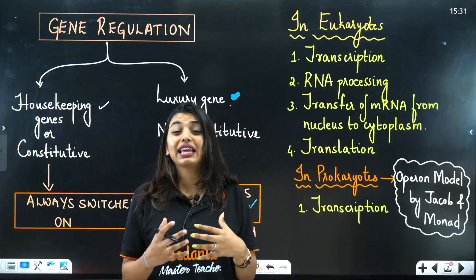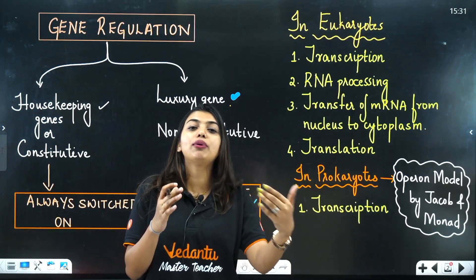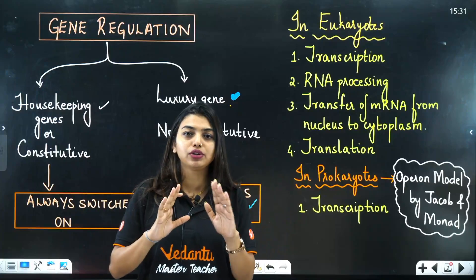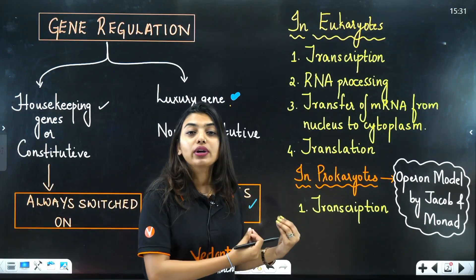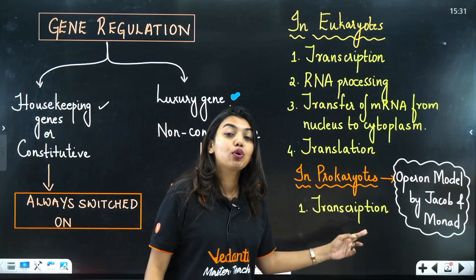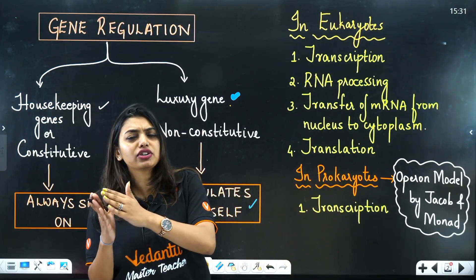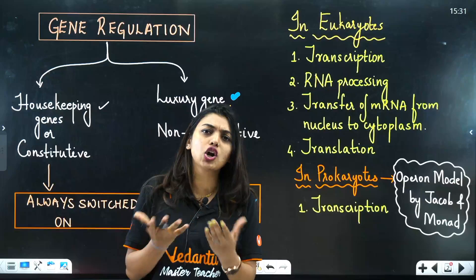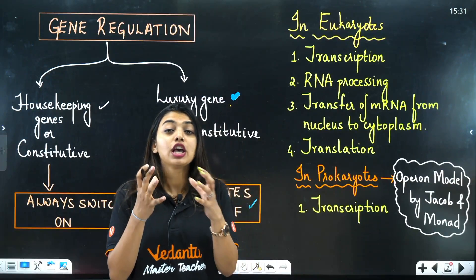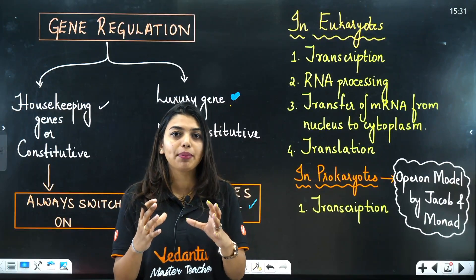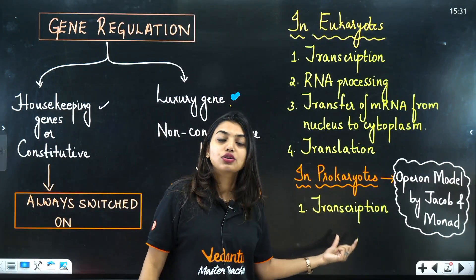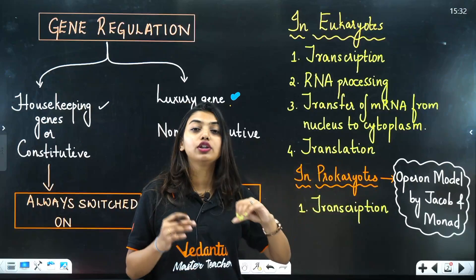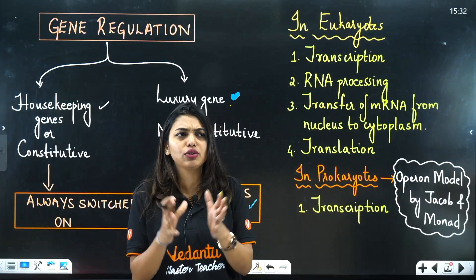In prokaryotes, since they are simpler organisms with polycistronic genes — meaning one gene codes for multiple proteins — transcription and translation are coupled reactions. RNA processing does not happen in prokaryotes, so the gene can only decide to switch off during transcription. This was established by the operon model proposed by Jacob and Monod.